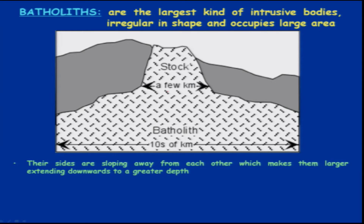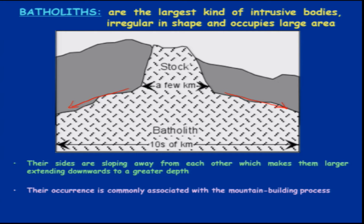These are having slopes dipping away from one another. Hence, at greater depth you will find that they are covering very large areas. Their occurrence is commonly associated with mountain building activity, so where we have subduction zones we will find this type of intrusive bodies.